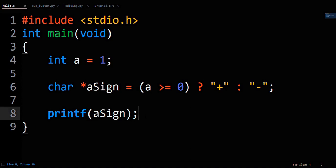So in this case, it checks if A is greater than or equal to 0, meaning it checks if A is positive, and if it is, it assigns the string plus to be A's sign.